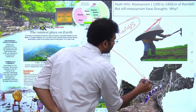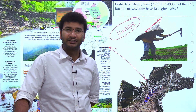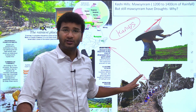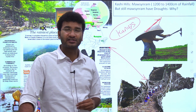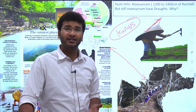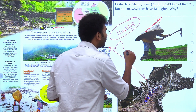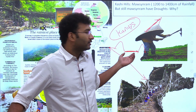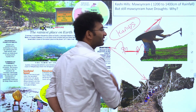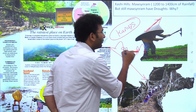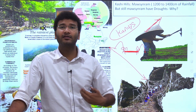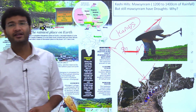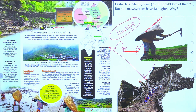The people of Mawsynram and Cherrapunji also have living root bridges. These are also recognized under the concept of effective utilization of available resources and living with heritage. Rather than constructing roads between hills, they use local Banyan trees and build bridges using the roots of the trees. These living root bridges have world heritage recognition for living with local resources.